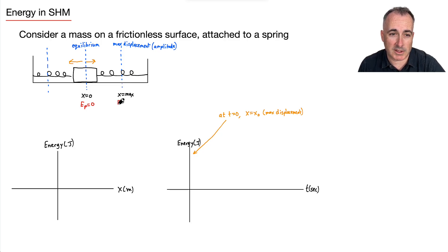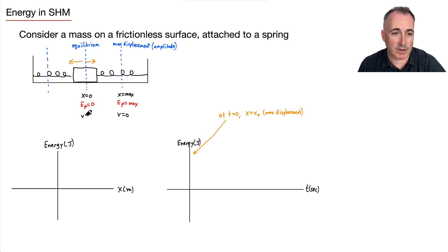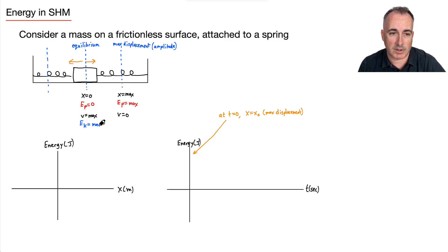As the mass reaches maximum displacement, it actually stops — so velocity V equals zero there. By contrast, at the equilibrium position the speed is at a maximum. The mass goes maximum speed through the middle, slows down to zero at the extremes, then maximum speed again, and so on. For kinetic energy EK = ½mv², if V is a maximum then EK is a maximum at equilibrium, and if speed is zero then EK is zero at maximum displacement.